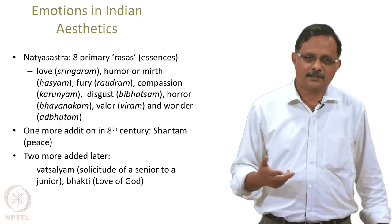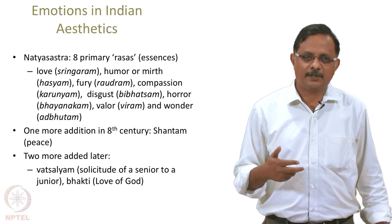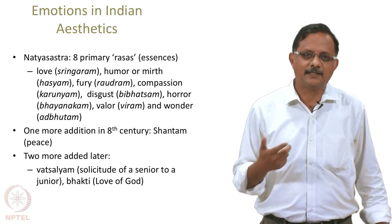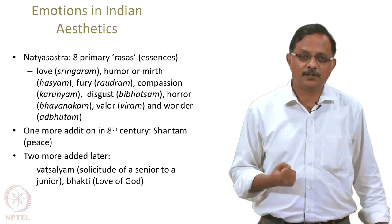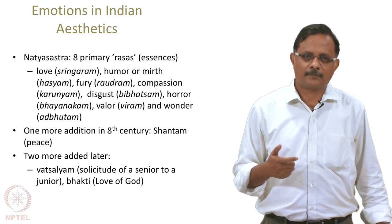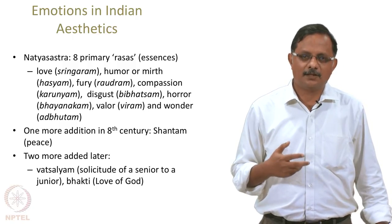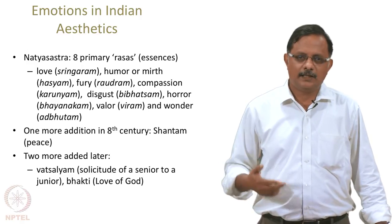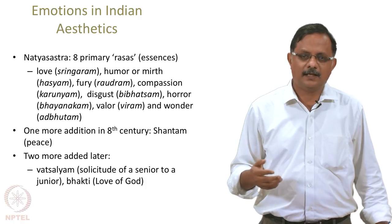In Indian aesthetics, the Natyashastra — a science of dance based on a book written by the sage Bharata — talks about eight primary rasas. 'Rasa' is commonly translated as 'soup,' but here it means essence or the essence of experience. When you sublimate experience, what are the basic elements or essences? The eight primary rasas are: love (sringaram), humor or mirth (haasyam), fury (raudram), compassion (karunyam), disgust (bibhatsam), horror (bhayanakam), valor (veeram), and wonder (adbhutam).